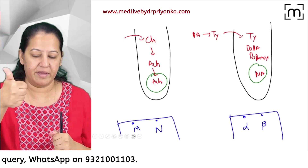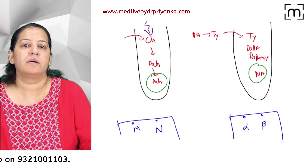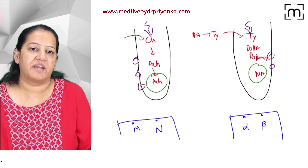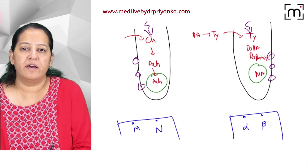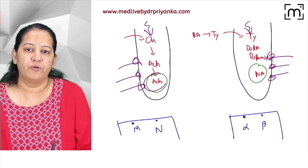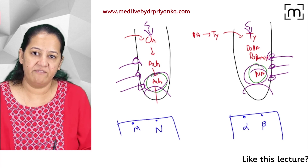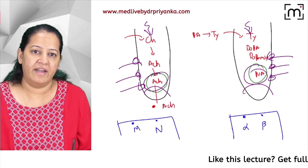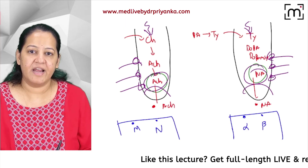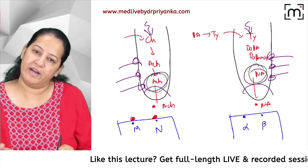Now, when the impulse comes, calcium channels open — calcium influx occurs on both sides, causing vesicle fusion. As a result, acetylcholine is released here and noradrenaline is released on the adrenergic side.